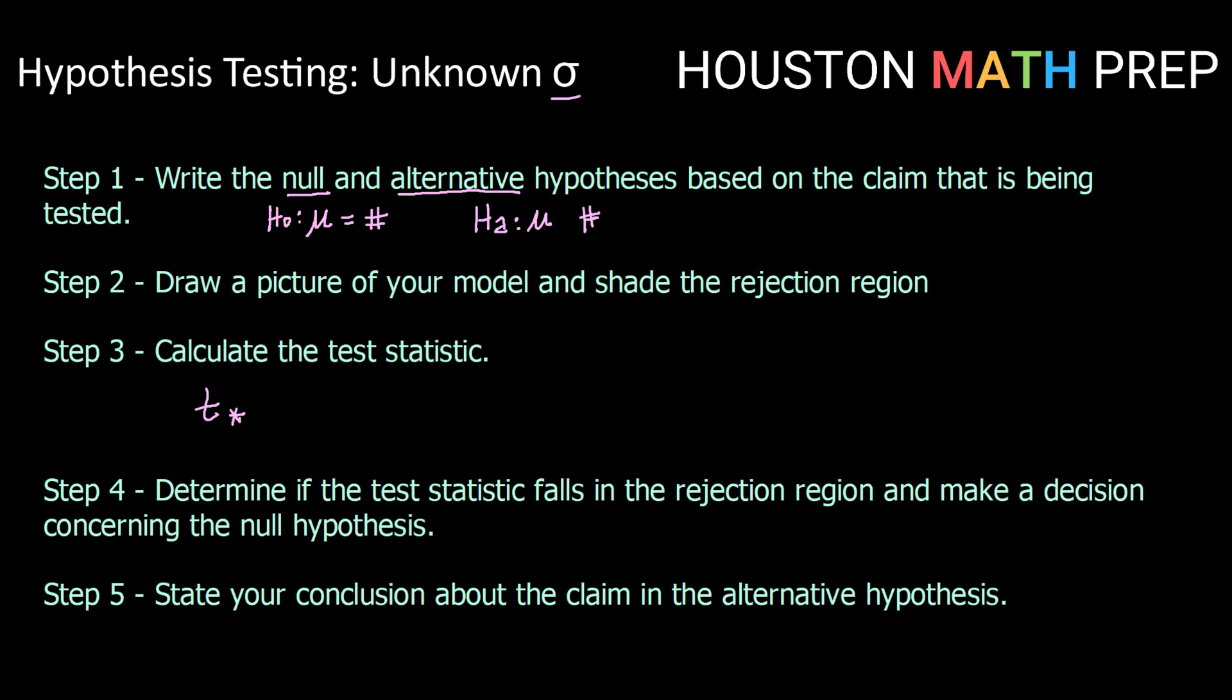So when we draw our picture of our model and let's say we're doing a one-sided lower, then what we're going to be finding here is a t critical value and our test statistic is going to be a t value.